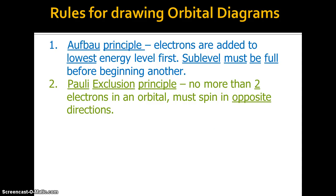Second rule, the Pauli exclusion principle. No more than two electrons are in an orbital and must have spin in the opposite direction. So that just means the arrows are pointed in opposite directions.